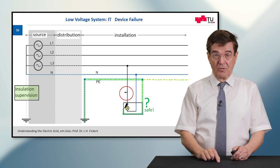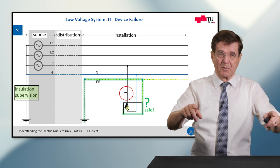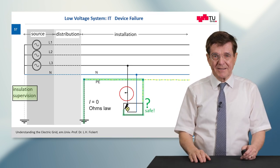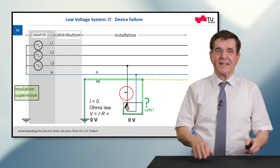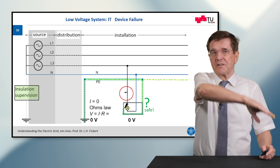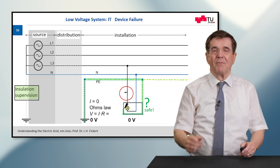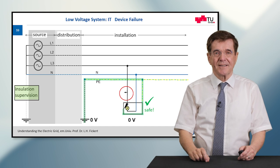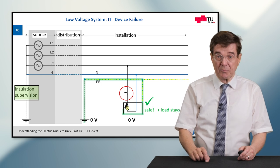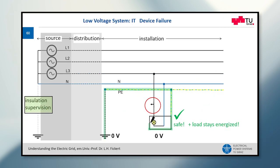Yes, it is safe. Here we must resort to Ohm's law: voltage across a conductor is proportional to the fault current times the resistance of that conductor. The current is zero, so the voltage drop is zero. Since this protective earth is grounded at one point, it has zero volts, and these zero volts are propagated to the device that I can hold in my hand — so this is safe. The same happens in a three-phase load. Importantly, the load stays energized: we have an insulation fault, the system is safe to touch, and the current is still doing its work. This is used, for example, in operating theatres in hospitals.